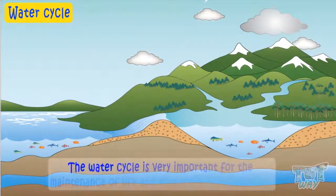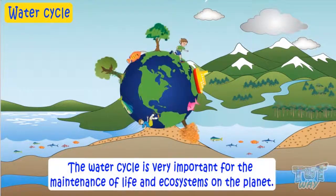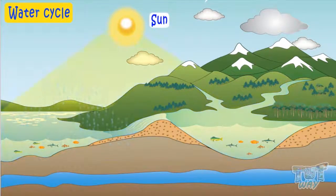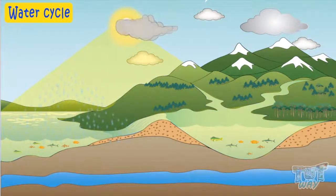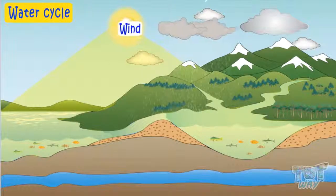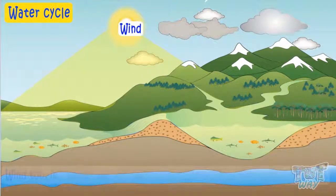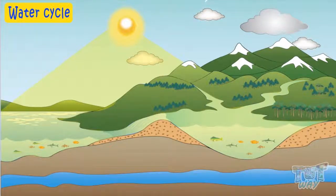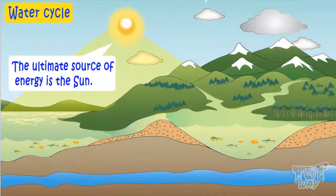The water cycle is very important for the maintenance of most life and ecosystems on the planet. It is the sun that heats up the water in oceans and other water bodies and leads to evaporation. Wind is also the driving force behind clouds that leads to precipitation, and wind too is a result of differential heating of the earth due to the sun. So the ultimate source of energy for the water cycle is the sun.